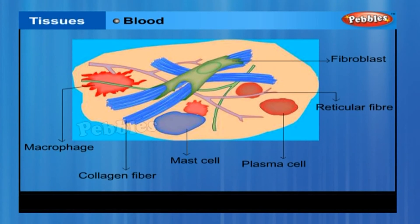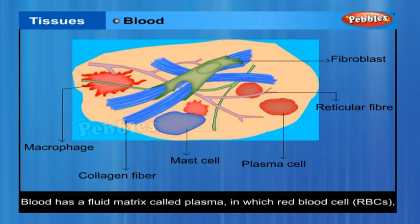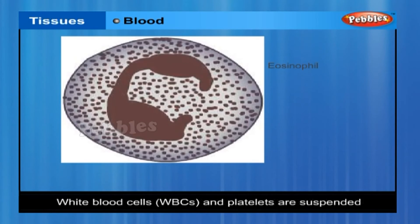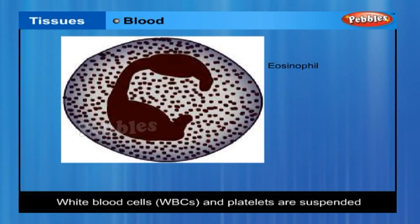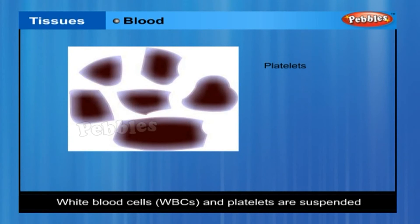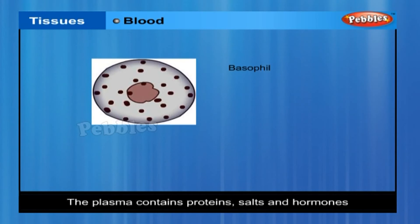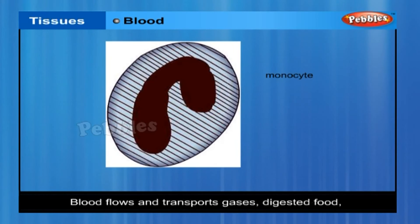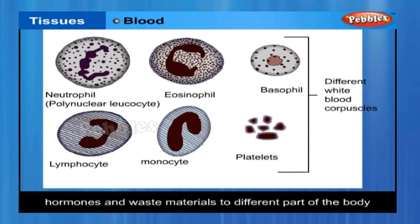Blood. Blood has a fluid matrix called plasma in which red blood cells (RBCs), white blood cells (WBCs) and platelets are suspended. The plasma contains proteins, salts and hormones. Blood flows and transports gases, digested food, hormones and waste materials to different parts of the body.